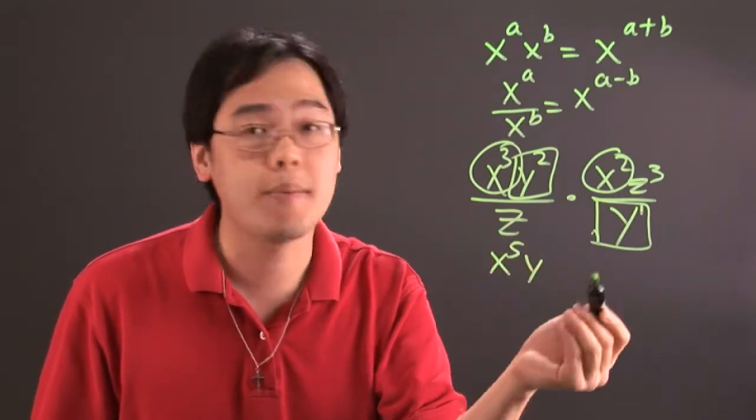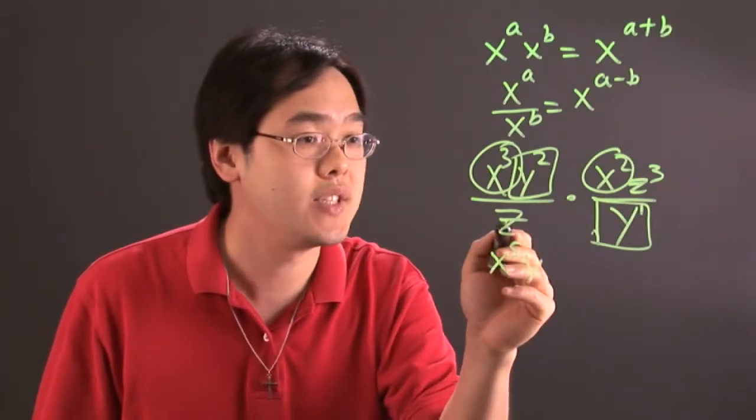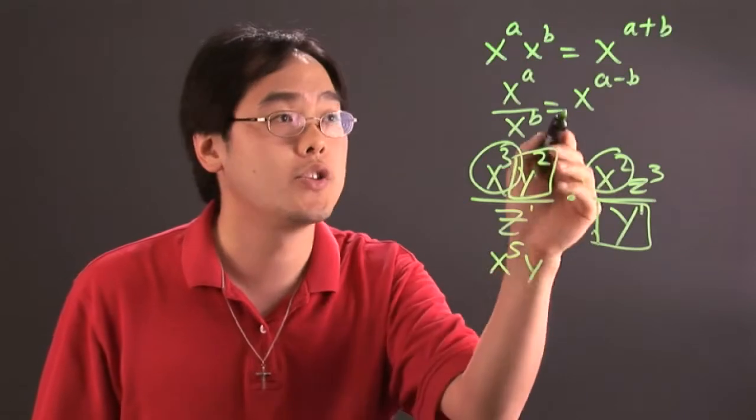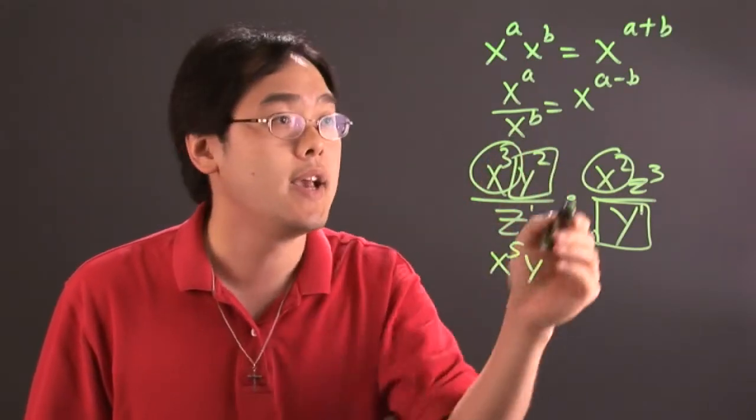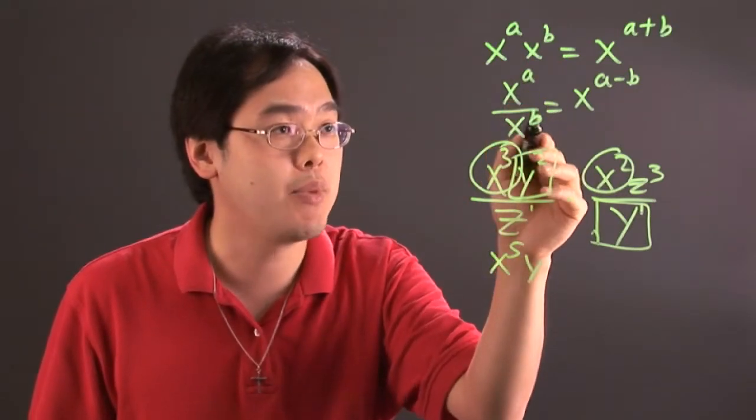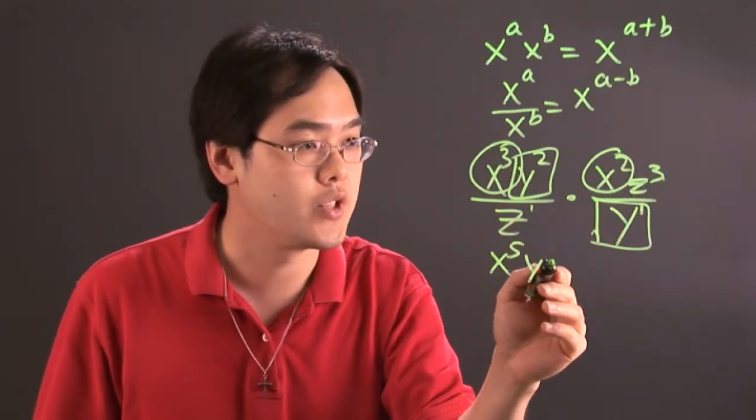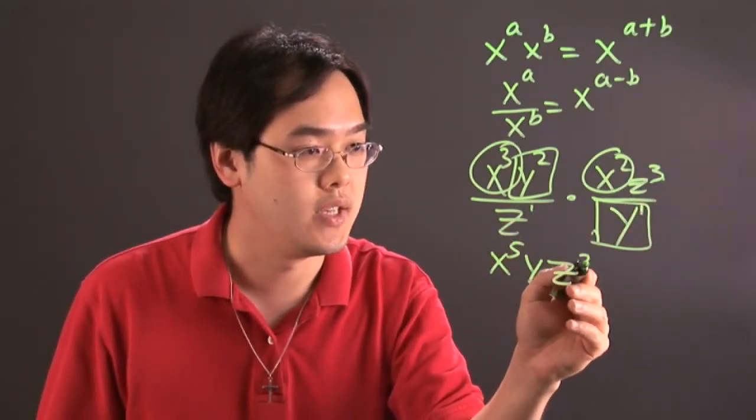And then with the z's, same kind of idea, because you have a z to the one in the denominator and z to the third in the numerator. So you would use this rule once again. You have a three on top and a one in the bottom. So you do three minus one, which is going to give you z squared.